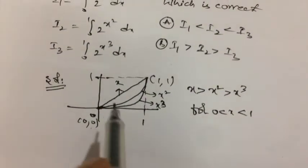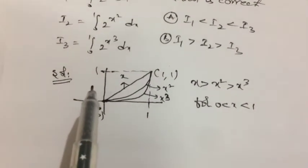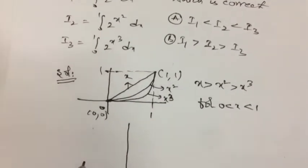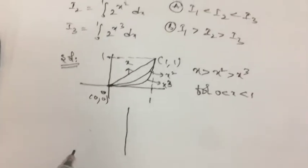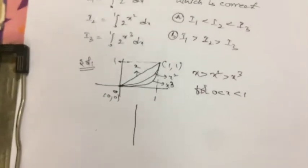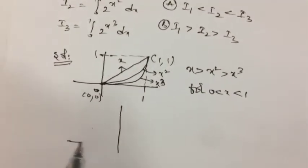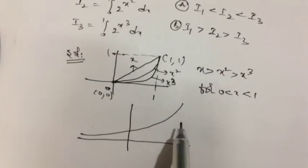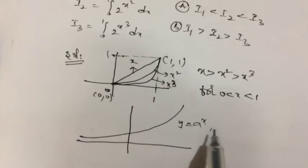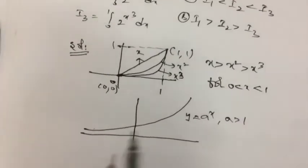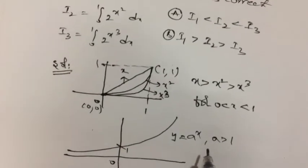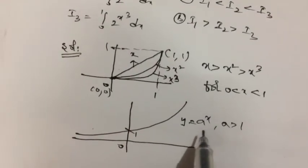So if you want to compare 2^x, 2^(x²), 2^(x³), if you look at the graph of a^x, y equal to a^x will be like this if a is greater than 1. So at 0, it will become 1. So here we have 2^x, so 2 is obviously greater than 1.